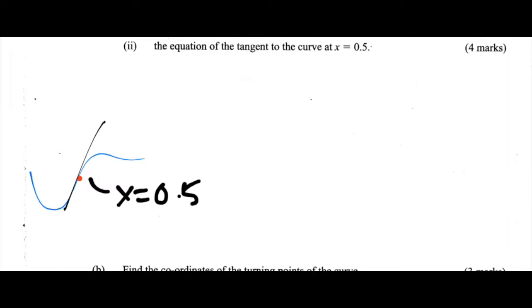So how do we find the tangent to the curve at this point? Well, first of all, to find the equation to any straight line, we first have to find the gradient of that straight line. And we're going to use the first derivative of this curve to find the gradient.